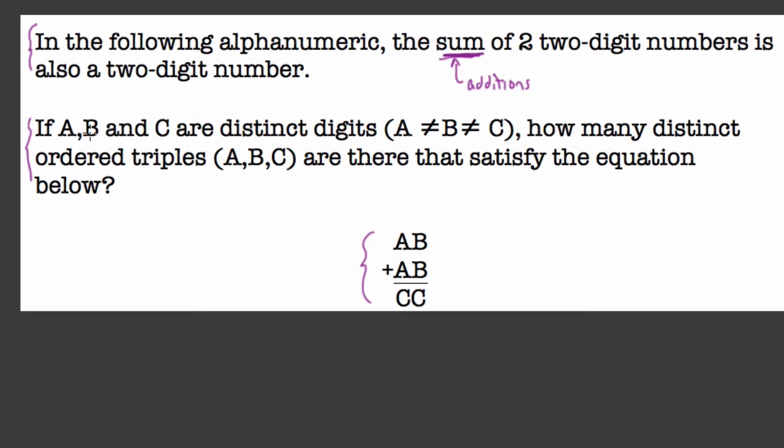The other thing they're telling us here is that A, B, and C are distinct digits. So if they're distinct, that means they can't equal each other, and that's what this part is telling us, that A does not equal B, and B does not equal C, which also implies that A and C don't equal each other as well. So none of them are equal.